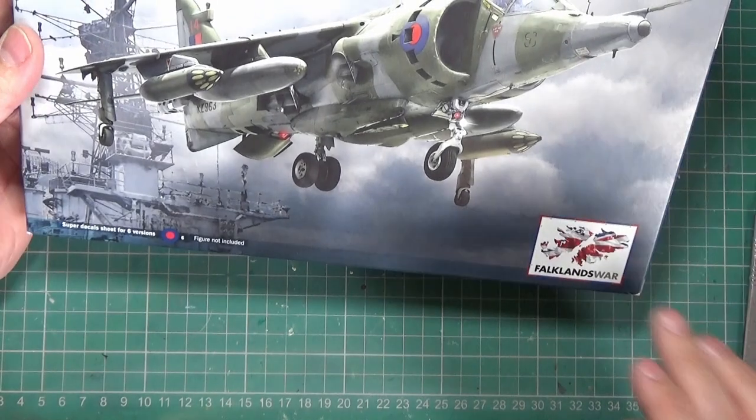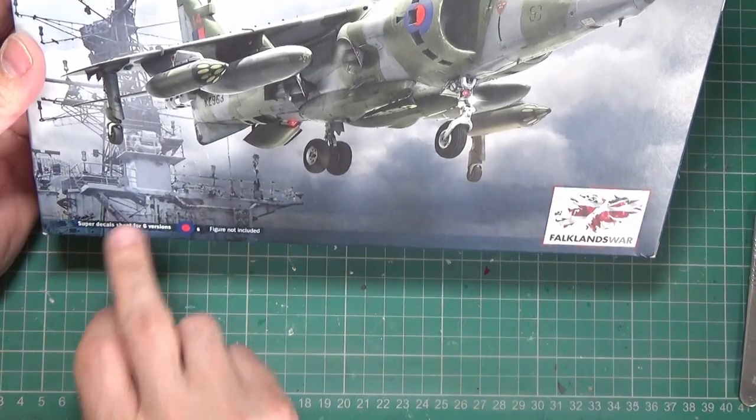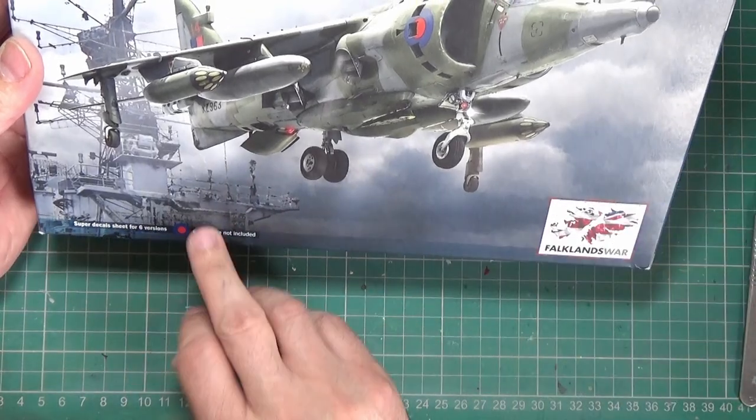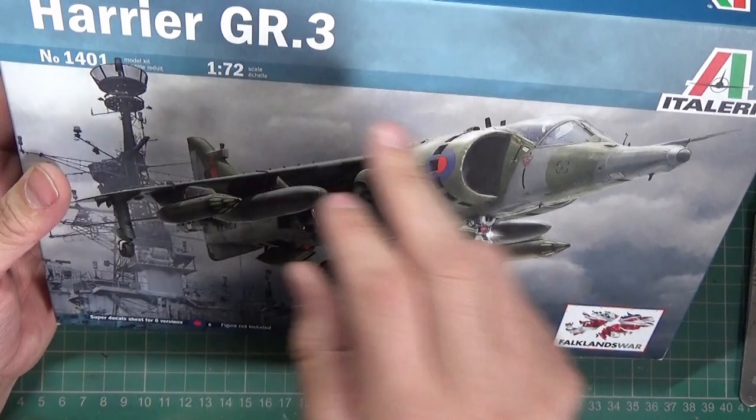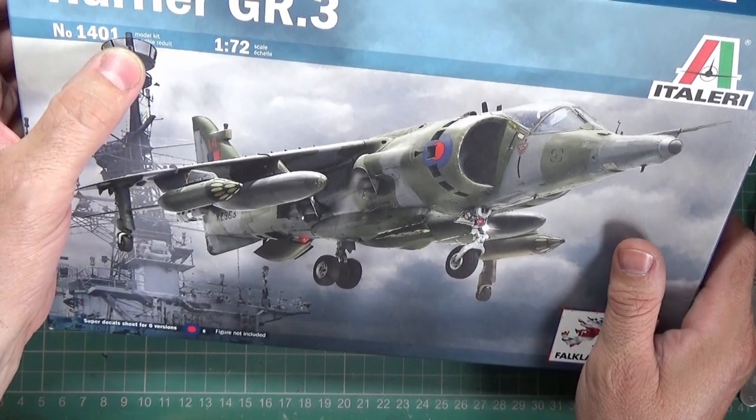Let's look at the box first. Right, here we go. Falklands War Special. Super decal sheet for six versions. Figure not included. Yeah, that's not new though. 1:72 scale, model number 1401.